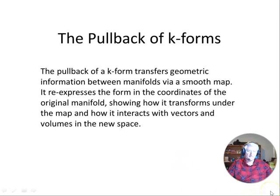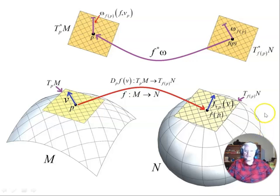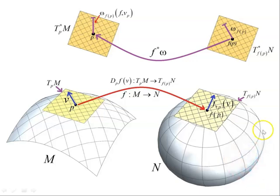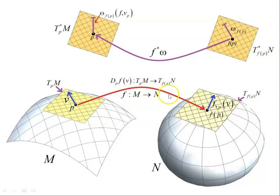Let's have a look at a diagram. Let's go back and look at the case of 1-forms. So we have manifold M and another manifold N. We have a point P on the manifold M, and we have a map — F is a map from M to N, so it takes points on M and maps them to points on N. One such point is the point P here, which is mapped under F to the point F of P. At this point P, we also have a vector V, and that exists in the tangent space to the manifold M at the point P.